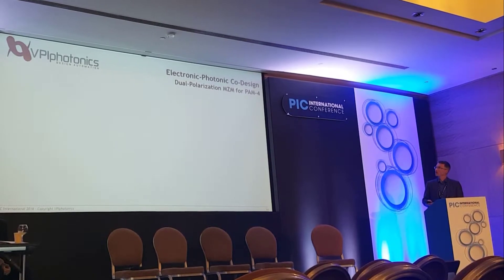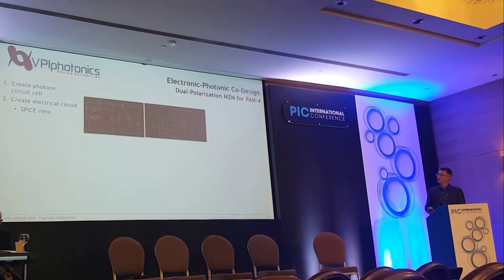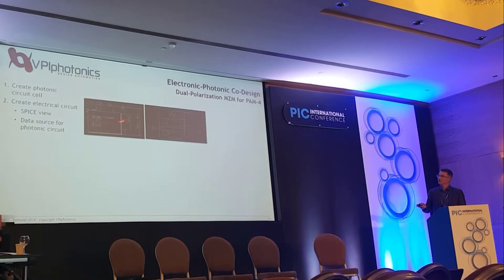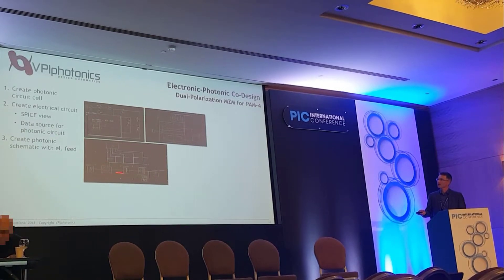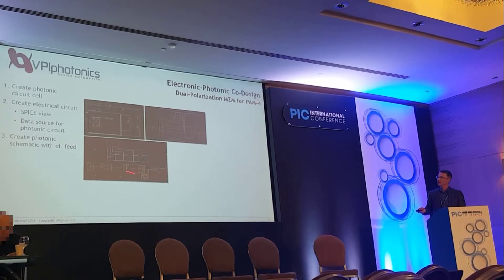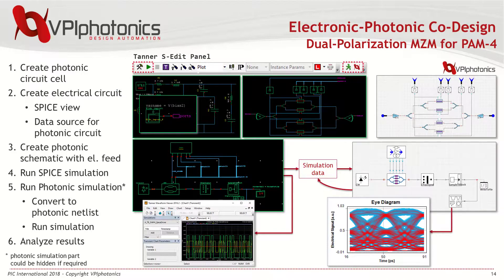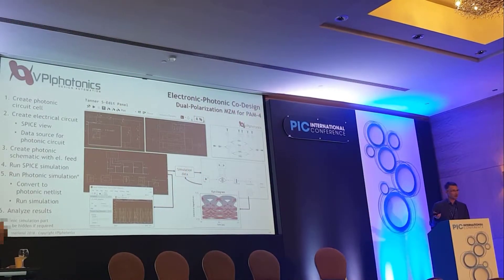As one example, a dual-polarization modulator for PAM4: we first create the photonic circuit schematic in S-Edit, then create the electrical circuit for the driver — first a SPICE simulator setup, then the actual data source for the photonic circuit. Both are integrated together to create a photonic schematic view with a laser, modulator, and analyzer. To simulate the whole thing in S-Edit, you directly run the SPICE simulation to get the driver data, then translate that into the photonic netlist, feed in the pre-calculated data, run the full simulation, and obtain eye diagrams in the optical domain.